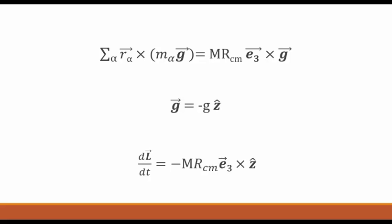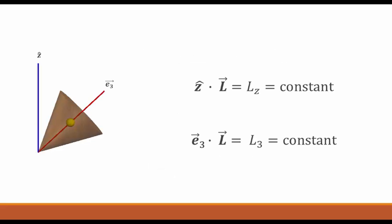The spinning top has three conserved quantities: angular momentum about the z axis, angular momentum about the e sub 3 axis, and energy.